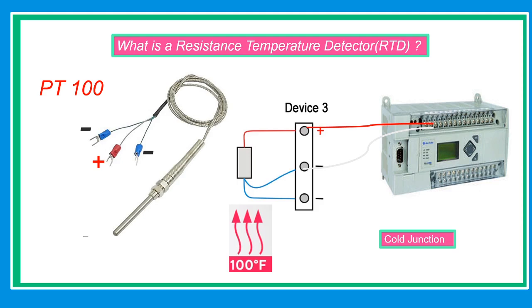While the thermocouple is based on Seebeck effect principle, when two dissimilar metals are joined, a predictable voltage will be generated that relates to the difference in temperatures between two junctions.